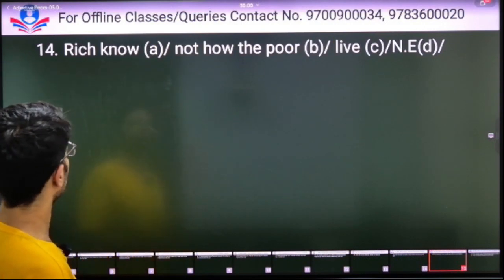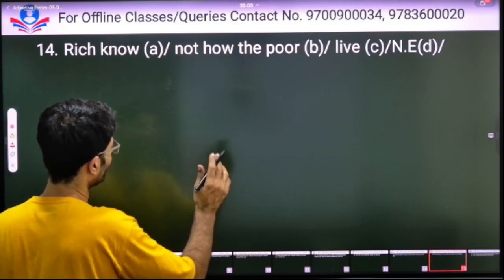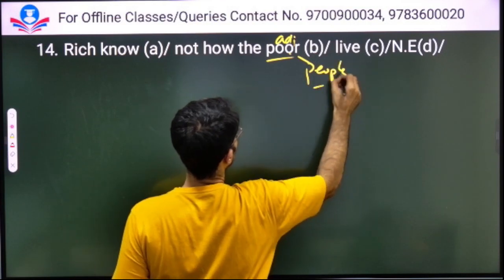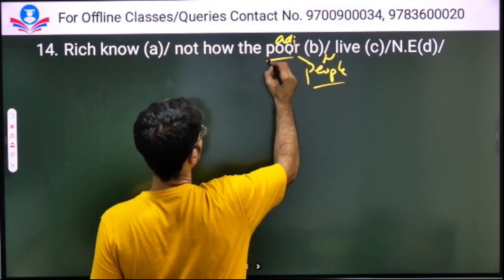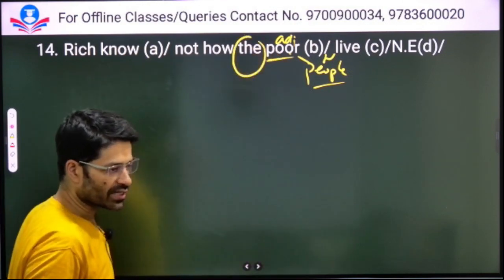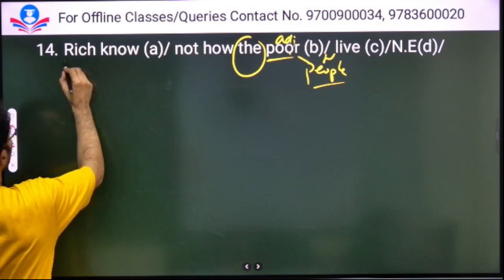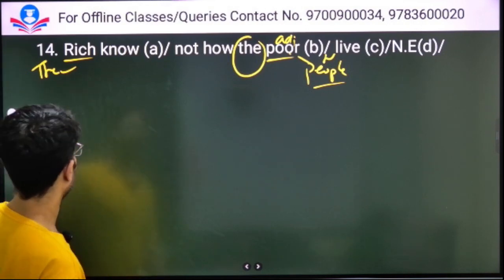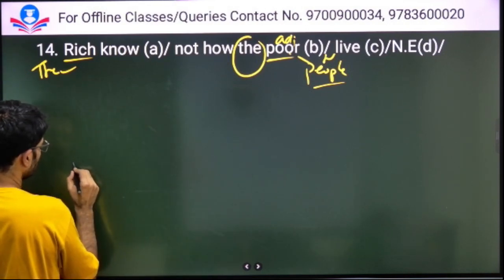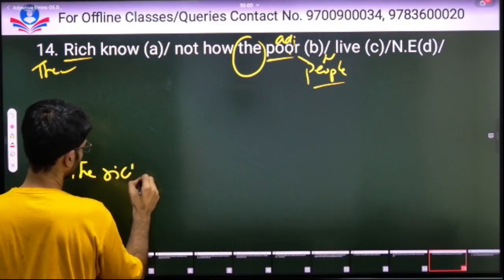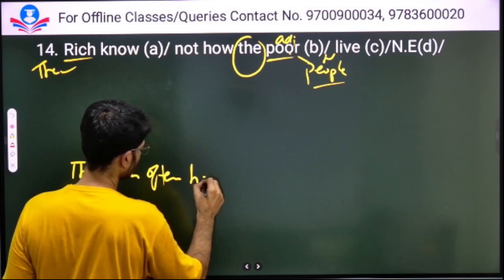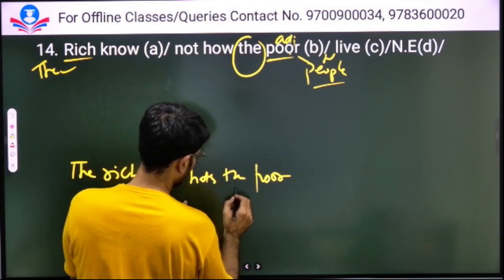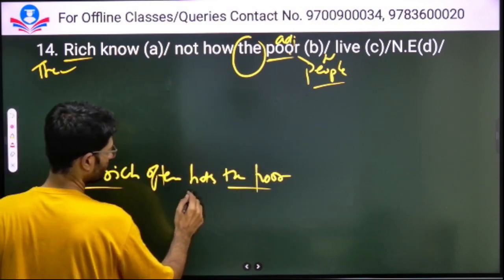The rich know not how the poor live. If you see, 'the rich people' - here 'rich' is an adjective with 'people' understood. This is the rule: we have the article 'the' plus adjective to represent a class. 'The rich' means rich people as a class. The rich often oppress the poor. Both are classes, so 'the' comes with both.